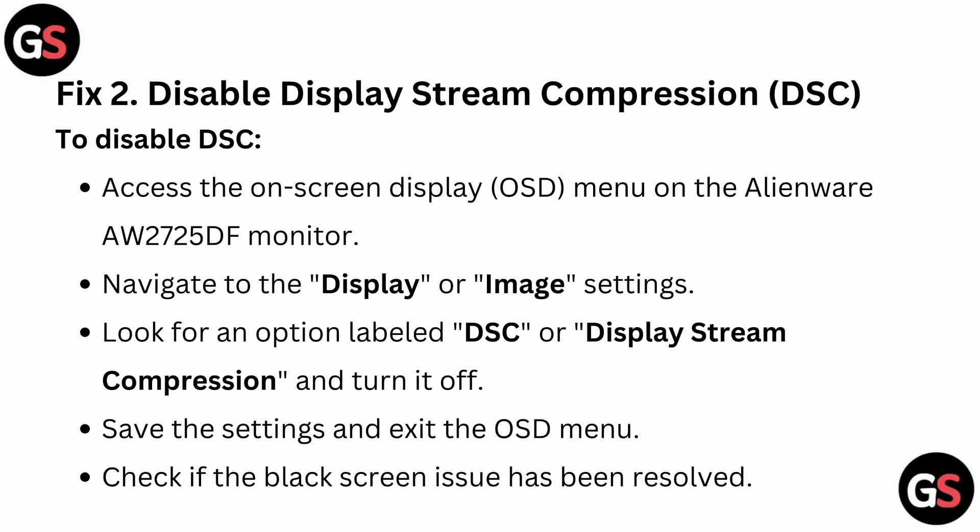Fix 2: Disable Display Stream Compression (DSC). To disable DSC, access the on-screen display (OSD) menu on the Alienware monitor. Navigate to the display or image settings and look for an option labeled DSC or Display Stream Compression.